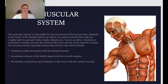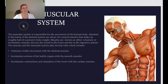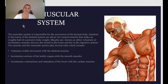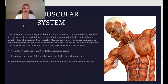Moving on to the second subdivision of the musculoskeletal system — we just finished talking about the skeletal system, and now we will talk about the muscular system. The muscular system is responsible for the movement of the human body. Attached to the bones of the skeletal system are about 700 named muscles that make up roughly half of a person's body weight. Muscles are known as either voluntary or involuntary and are also found in the heart and in the digestive system. The muscles play several roles, including voluntary bodily movement with skeletal muscles, involuntary actions of organs with smooth muscles, and involuntary contractions and relaxation of the heart with cardiac muscle.